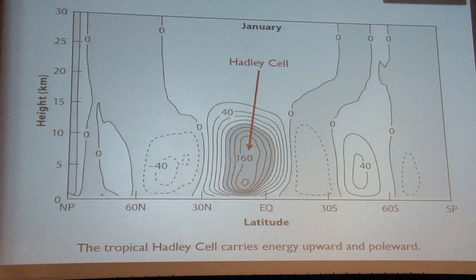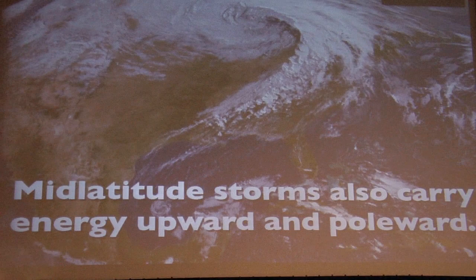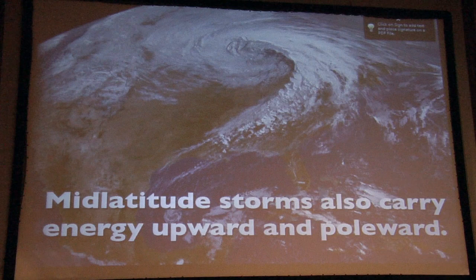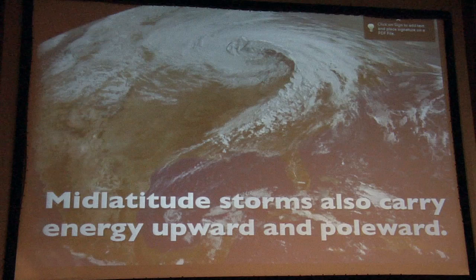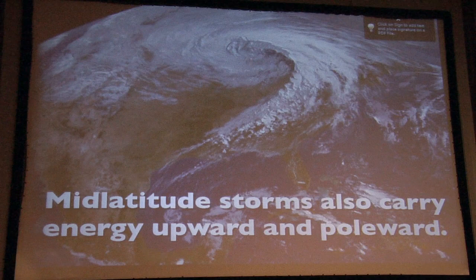Mid-latitude storms also carry energy upward and poleward. In the tropics it's the Hadley circulation and the thunderstorms; in mid-latitudes it's the weather systems we all experience in North America, and again, thunderstorms. As we ride along this cloud sheet, the air parcels are actually gradually rising — that's why you see a cloud. So the energy is being carried upward but also being carried toward the north.